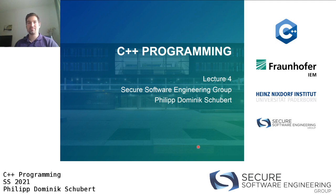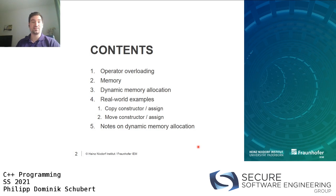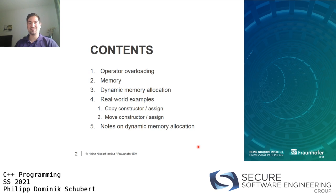Welcome back to our C++ programming lecture, the fifth lecture. Today we will have a look at operator overloading — how to associate custom meaning to existing operators. We will also talk about memory and how it is organized in C++ programs, and once we understand how memory works, we will talk about dynamic memory allocation, why we need it, and how to make use of it. We will also see some real-world examples.